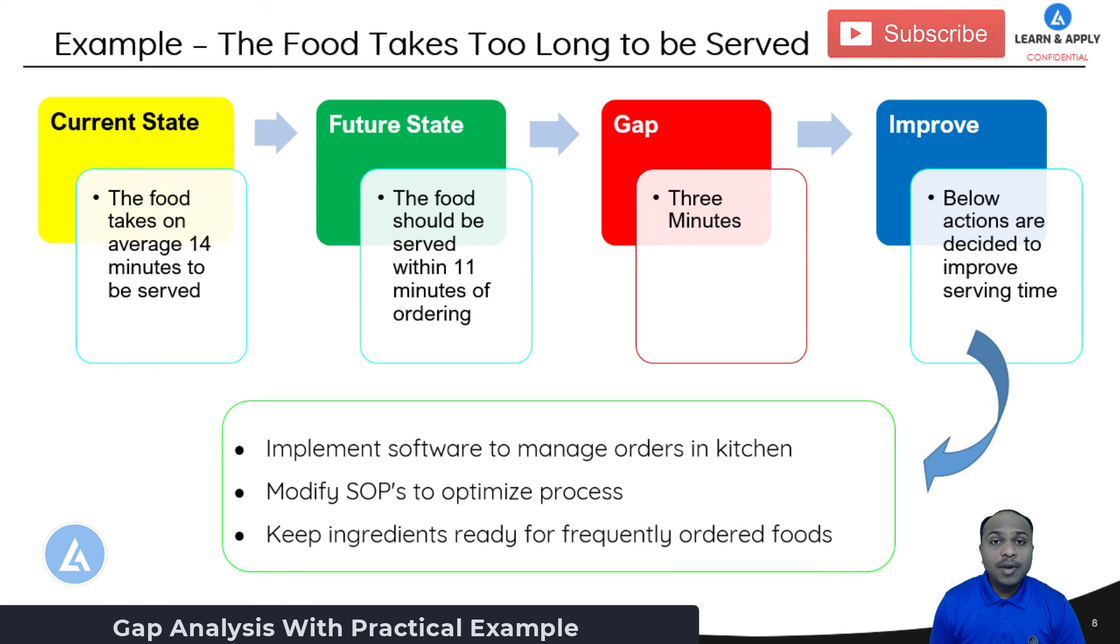From this example I am sure that you have got the complete clarity about gap analysis and how to use that gap analysis in real life. This gap analysis is not only applicable for the organization product or process performance. You can use this tool anywhere including your personal life. You will also get significant results by application of this tool in your personal life as well. This is all about the gap analysis and let's see another important concept in Lean Six Sigma in the next video.